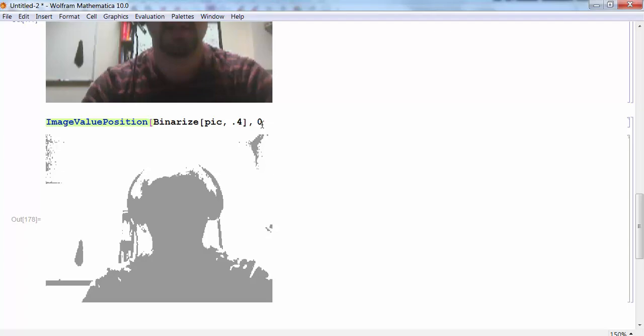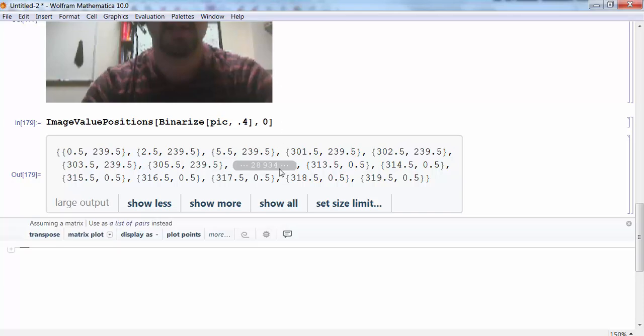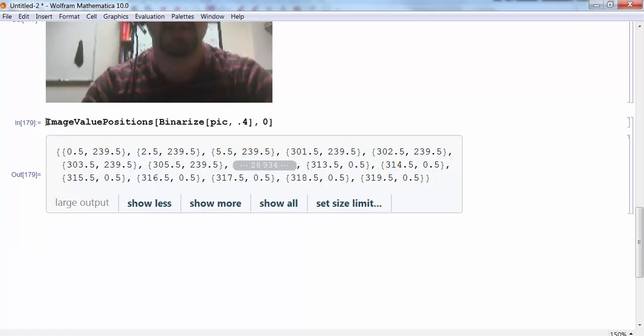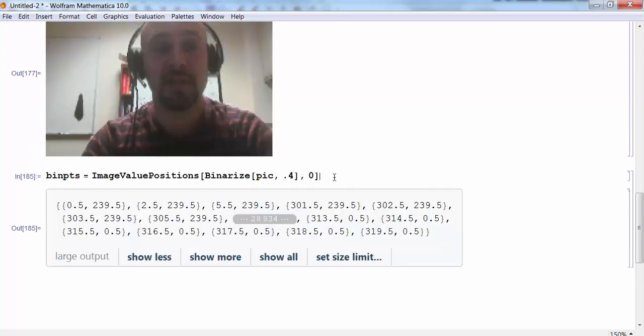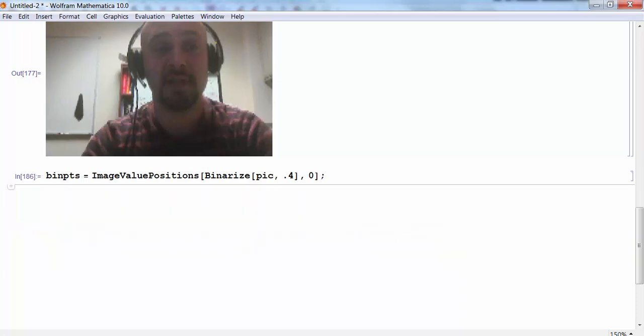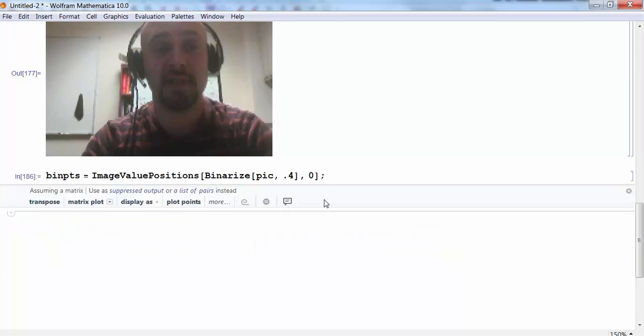Now what this is going to do, it's going to gather up all the points with specific values. I'm going to choose a value of zero. And what this is going to do, ImageValuePositions, it's going to pull out the points that are black. And it's going to give me a big list of all these points. Now I don't necessarily want to see all these points, but I do want to store those points so that I can manipulate them with my transformation later. So I'm going to store all those big list of points to binarized points. That's going to be my shorthand name for it. I'm going to store those points to that. All right. I don't want to see all these points. So I'm going to add a semicolon after it. And there I've stored all those points to binarized points.